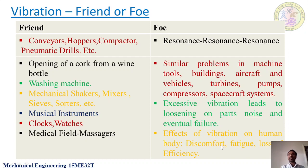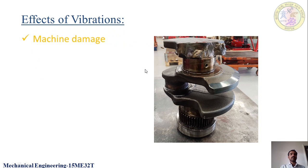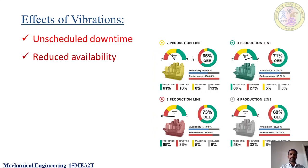Effects of vibration on the human body: if you have a fan producing noise due to vibration, it causes discomfort; similarly, loss of efficiency happens due to undesirable vibration. The reasons for vibrations are unbalanced forces in motion and dry friction between two mating surfaces, which produces self-excited vibration. If a machine is vibrating at higher frequencies, the machine itself can be damaged - you can see a damaged crankshaft where a particular position has been damaged due to vibration.